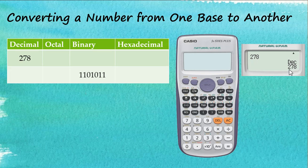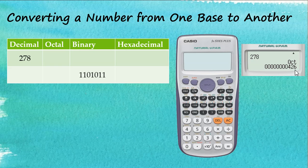Now we have decimal number 278 in our calculator. To convert to base 8, which is the octal system, we tap on OCT. In octal, 278 is written as 426. That's how we convert a number with base 10 to a number with base 8 — from the decimal system to the octal system.